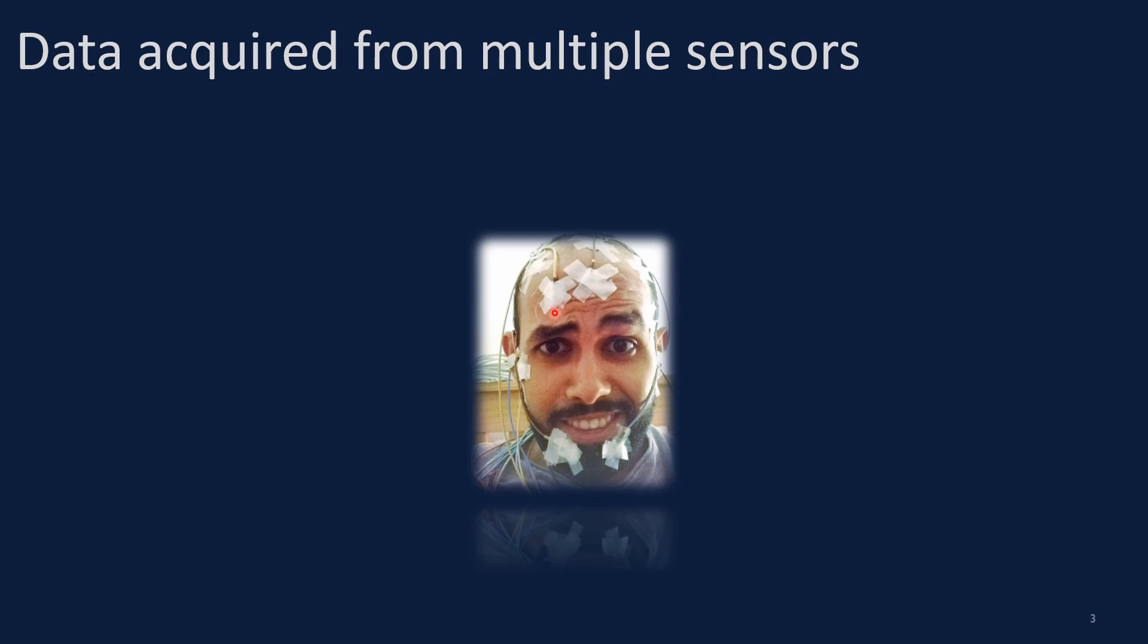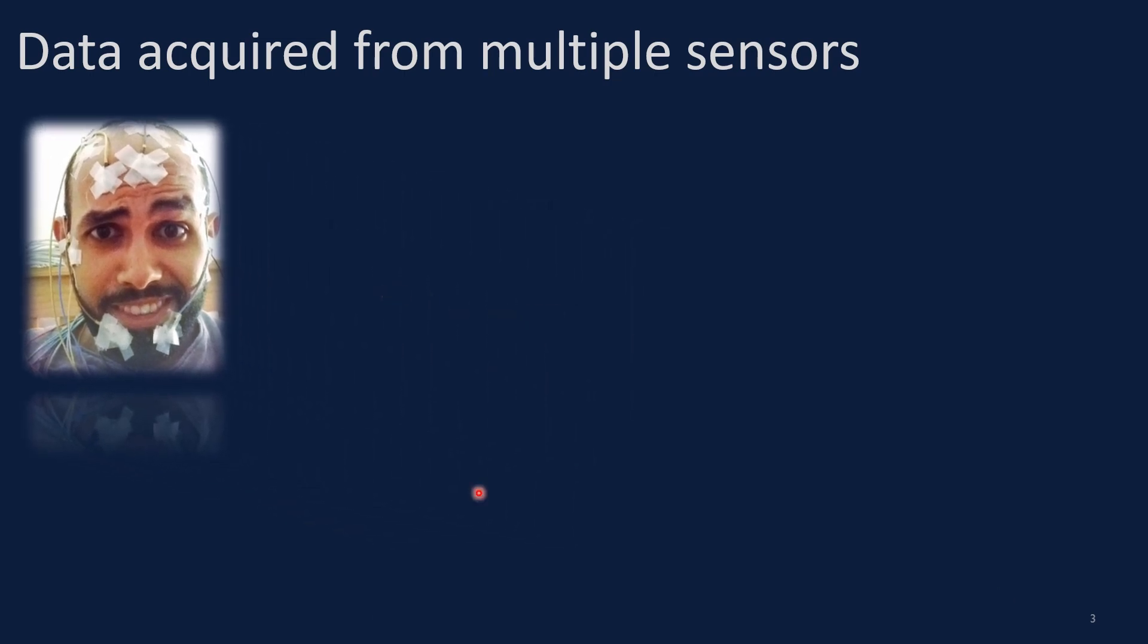Now imagine that the sensors are producing samples like that. So let's say this sensor is producing one sample and then another sample and then another sample, and we have this sensor producing one sample, second sample, a third sample, such that we can imagine that each sensor will be like a signal, and that's exactly what we see when we record the activity.